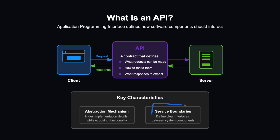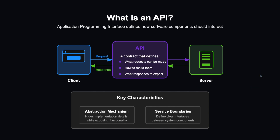An API also sets service boundaries because it defines clear interfaces between systems and components. This allows us to have multiple servers — one responsible for managing users, another for managing posts, and so on. Different systems can communicate regardless of their underlying implementation, like client browsers with servers or servers with other servers.